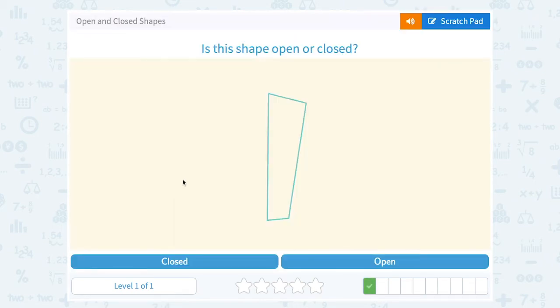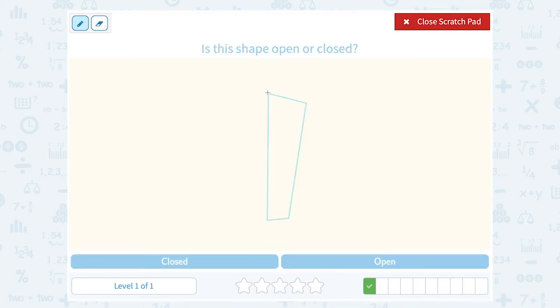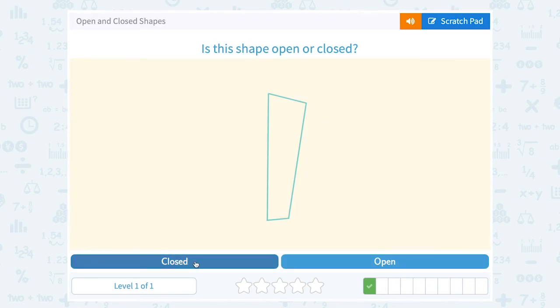Is this shape open or closed? Well, notice I don't have any openings. All of my line segments meet up at these vertices or edges, right? Closing my shape in. So we would call this a closed shape.